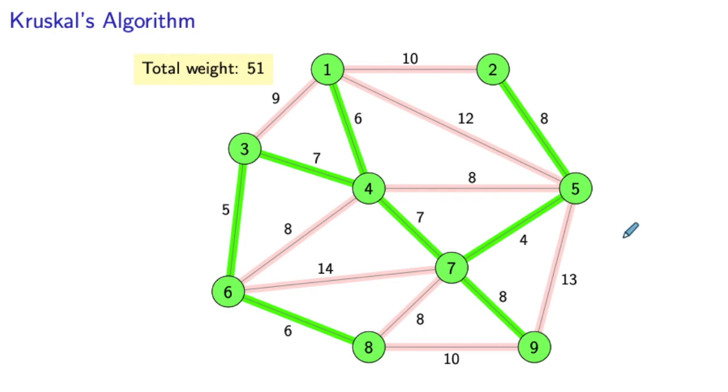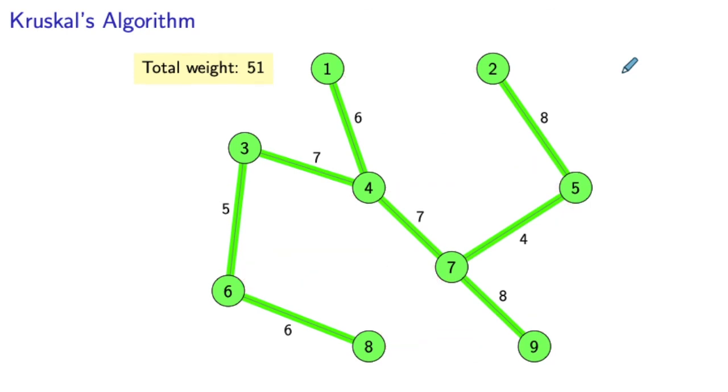So now we see that we obtained our optimal tree of total weight 51. All of the nodes have been covered now, so this is a spanning tree. This is how it looks like—this is our optimal solution.